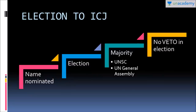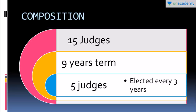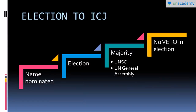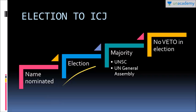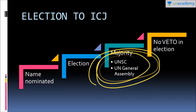Once the names are nominated by the National Groups of the Permanent Court of Arbitration, there may be any number of nominations. This time there were five vacancies and six nominations - six national groups nominated their own representatives. As far as the election is concerned, simultaneous elections take place in the United Nations Security Council as well as the United Nations General Assembly. The winning candidate requires majority in both houses. In the UN Security Council, there are 15 members - five permanent and ten non-permanent - so you need at least eight votes in the UNSC. The strength of the UN General Assembly is 193, which means you need at least 97 votes in the UNGA. You need simultaneous majority in both houses.